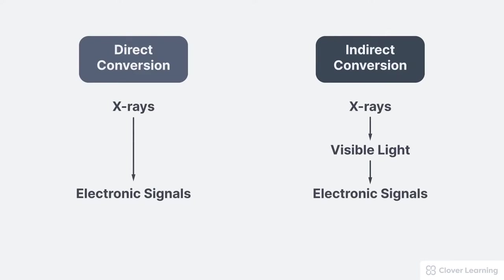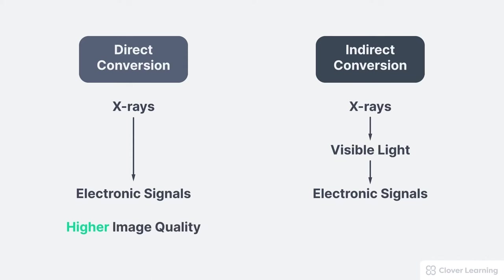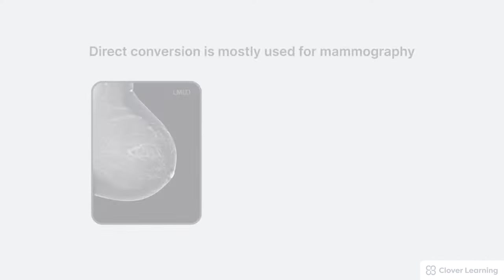So, direct conversion DR systems use a process which converts x-rays directly into an electronic signal. Because direct conversion DR systems skip the step of converting x-rays to visible light, they have higher image quality than other systems.